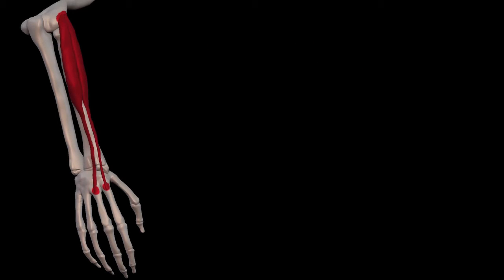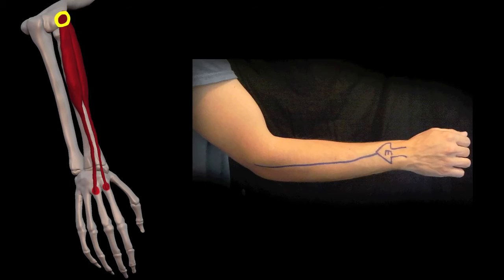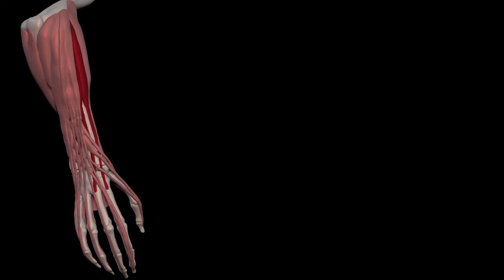The proximal attachment for these muscles is the lateral epicondyle of the humerus. As we have seen before, it is the common attachment of the extensors. Here we can see these muscles with the other muscles of the arm.